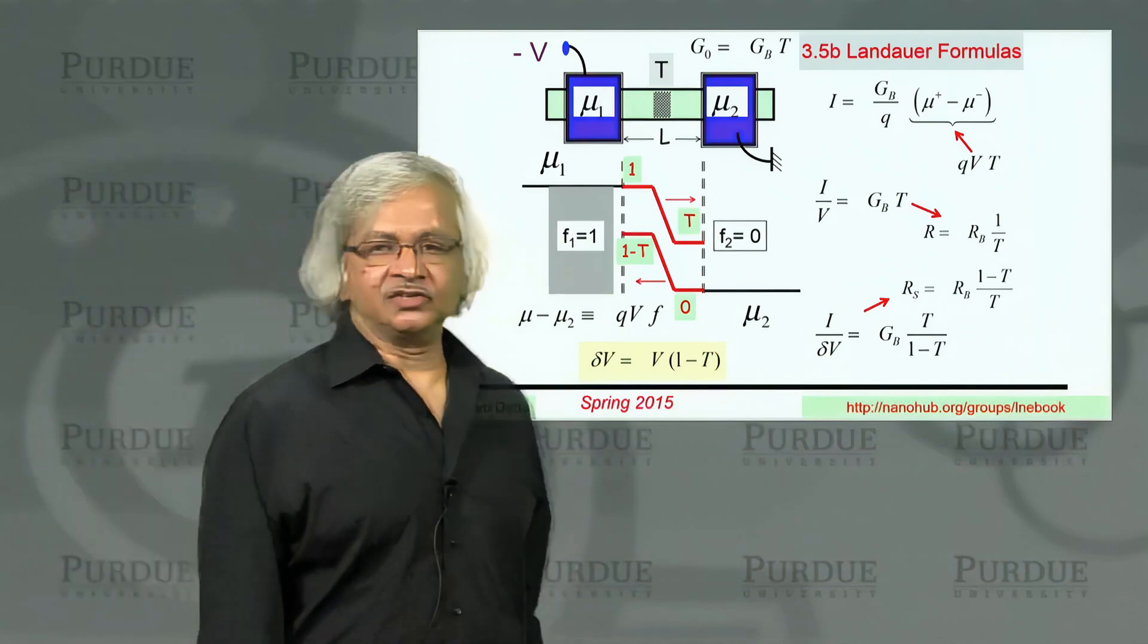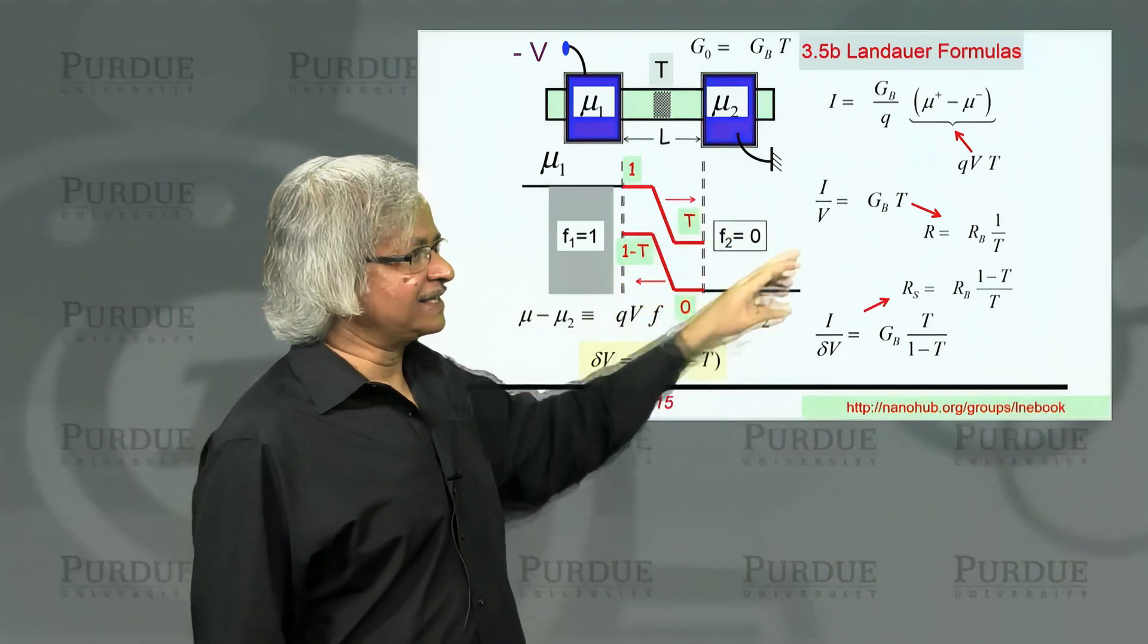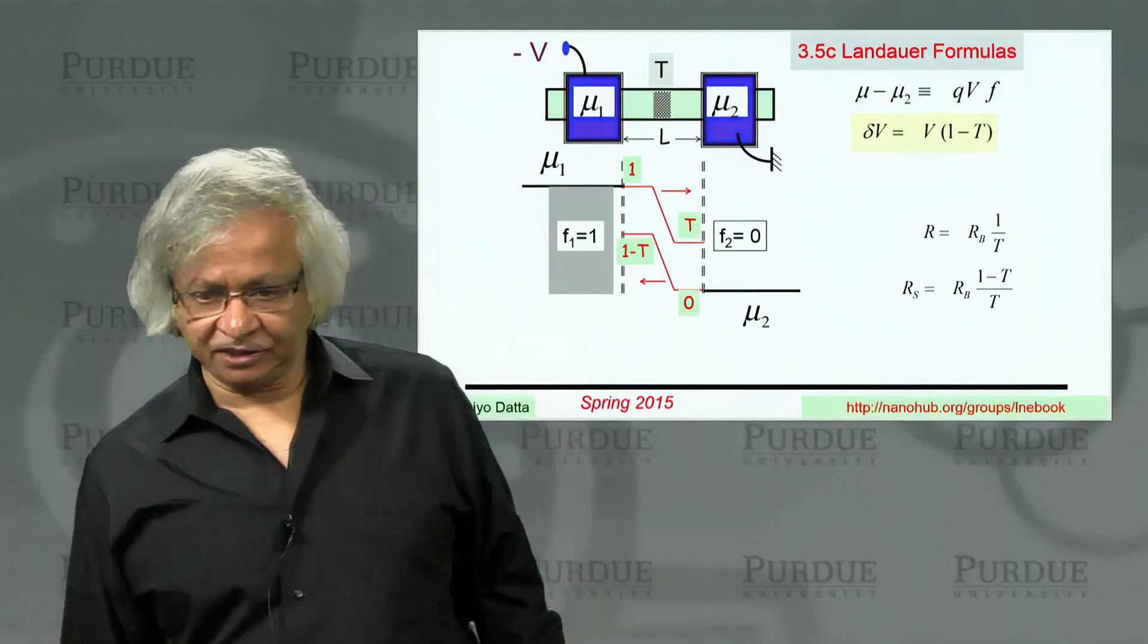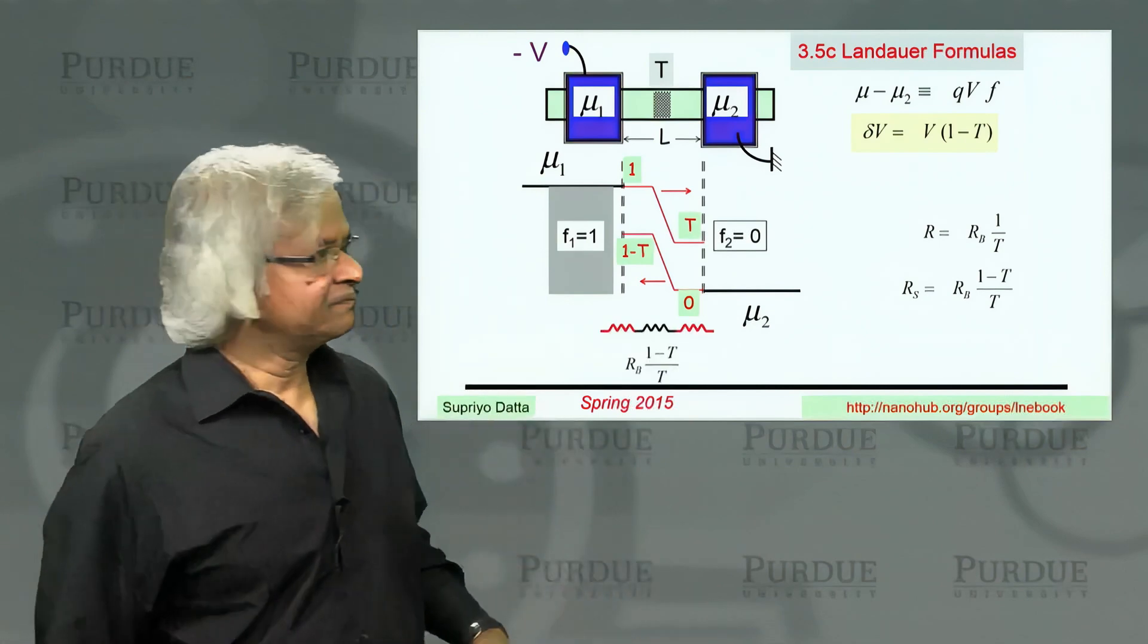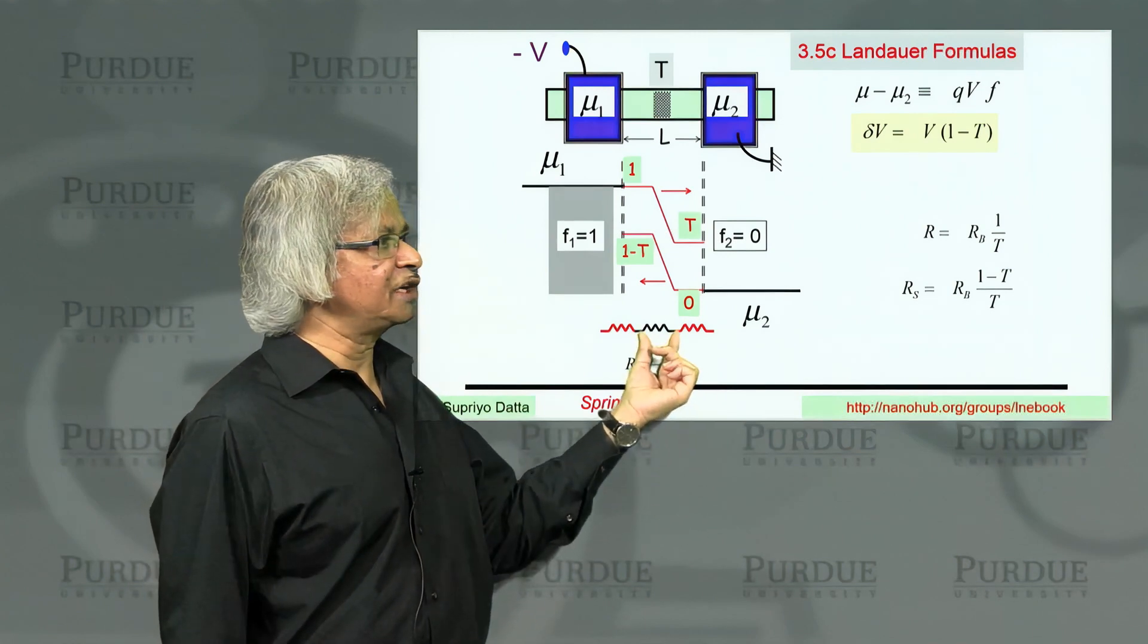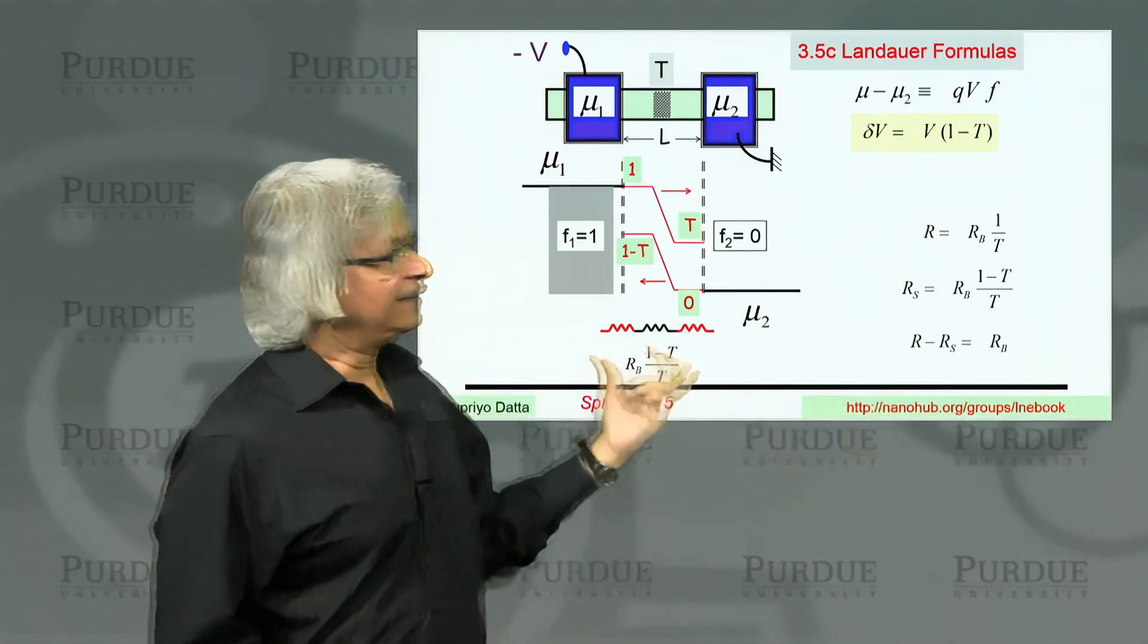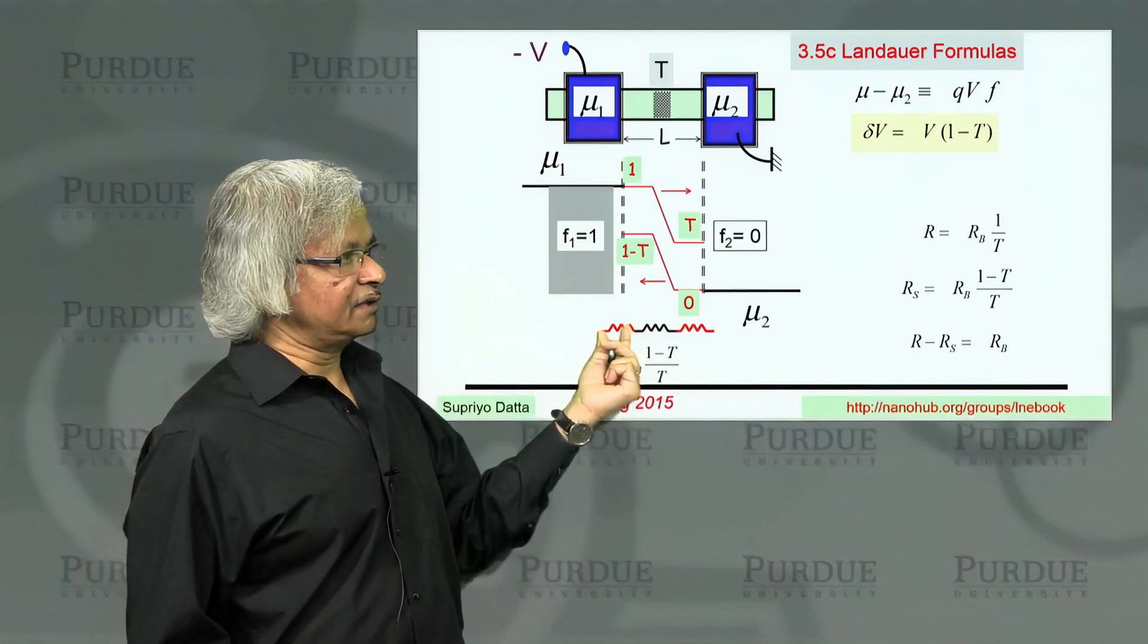Back in the 1980s, there was a lot of argument about what exactly represents the resistance. Is it 1 over T or is it 1 minus T over T? You'd see papers whose title is just that. Today, knowing what we know, the way we would explain it is there is a resistance which is like 1 minus T over T associated with the scatterer itself. And then there is the two parts, the difference between those two, that's R_b, that actually is what appears at the interfaces. That's the extra part.